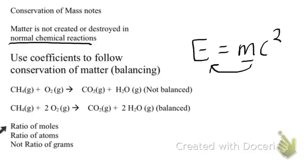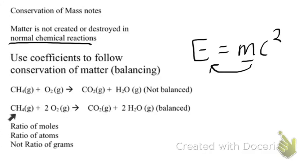These balanced coefficients show you a ratio of moles — for every one mole of methane, you'll have two moles of oxygen, and that will produce one mole of CO2 and two moles of water. It's also a ratio of atoms: for every one methane atom, there are two oxygen atoms, which will produce one carbon dioxide atom and two water molecules.